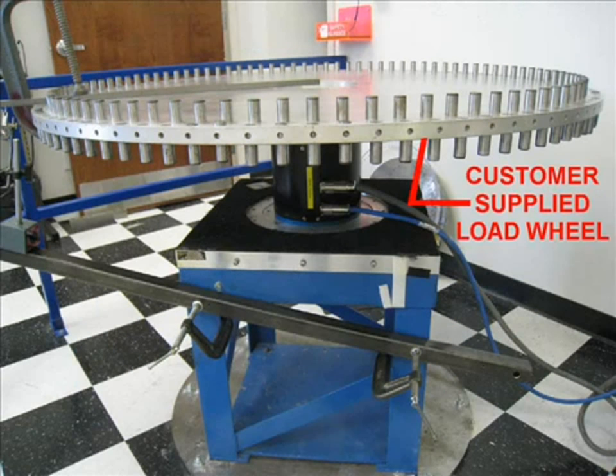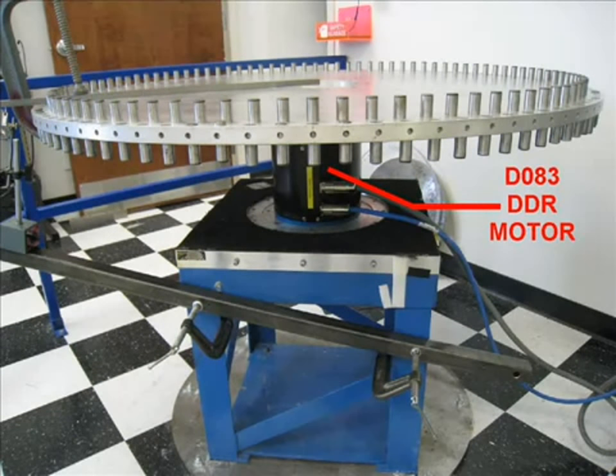In this setup, there is a customer-supplied load wheel bolted directly to the D083 motor. This motor is called a direct drive rotary or DDR motor because the load is directly connected to the motor.